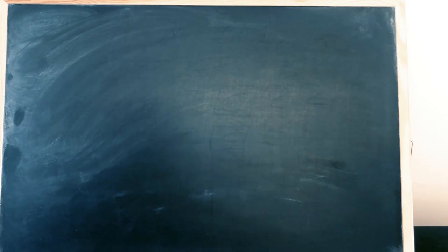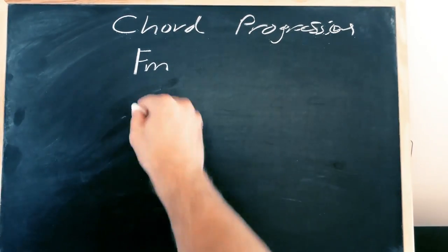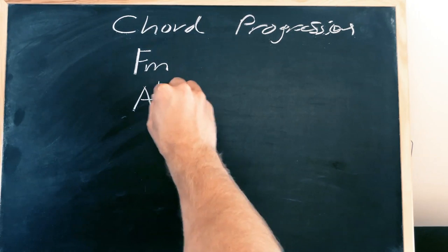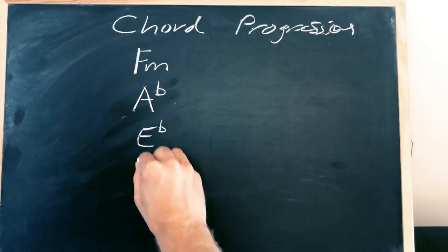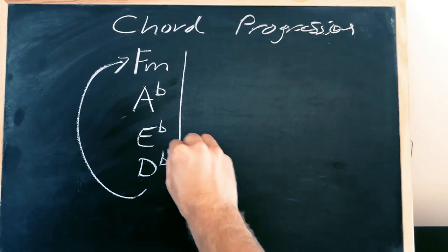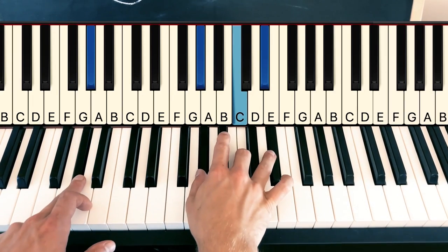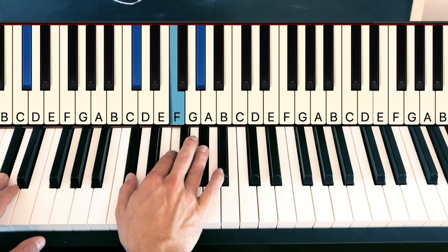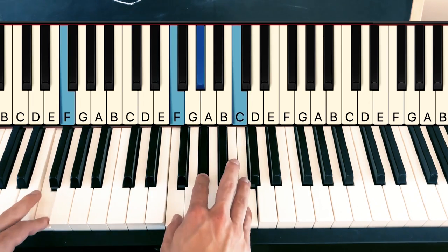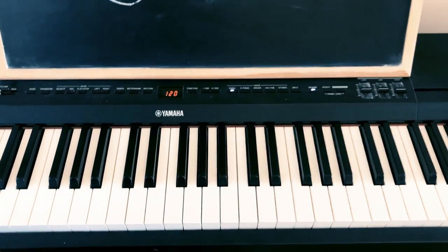Now let's see why it's important to learn these chords. We have things called chord progressions — a small instruction telling you which chords to play. In a lot of chord progressions we find four chords, for example: F minor, A flat, E flat, and D flat. After D flat, you go back to F minor and play the whole thing again. Let's play that — and we end up with Hello by Adele.